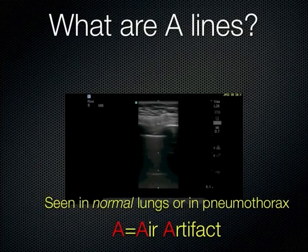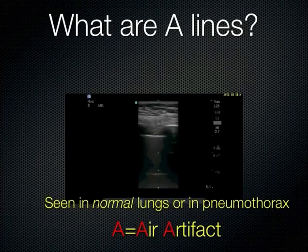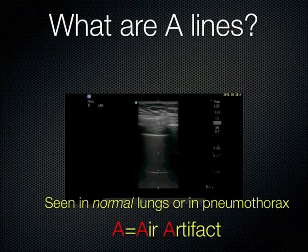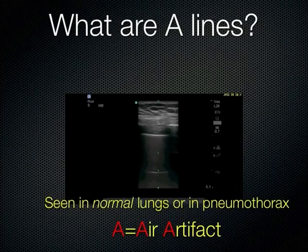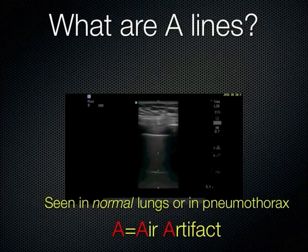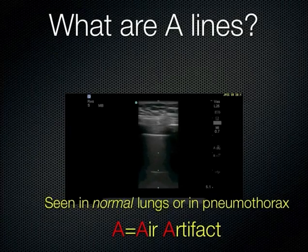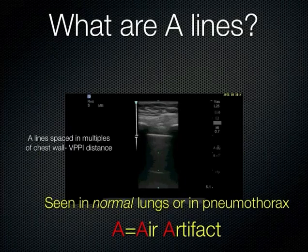Occasionally that resonance goes back to the probe, and the probe interprets it as a deeper structure. So you see repetitive horizontal artifacts. Also note that A-lines are spaced equidistant — the spacing from the chest wall down to the VPPI is the spacing you'll see. If you increase the depth, that spacing remains consistent throughout.